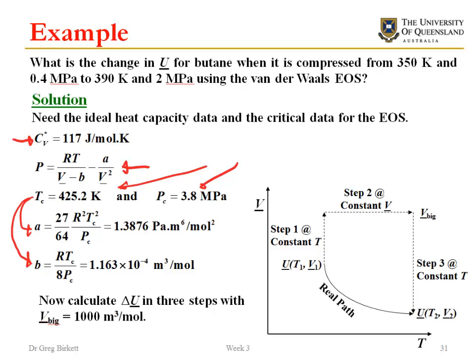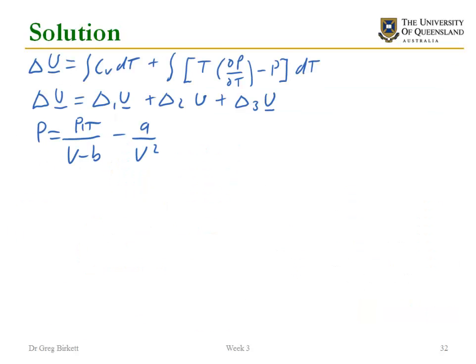Now I'm going to use the same path I was just talking about: up to ideal gas conditions, change in temperature, and then back to real gas conditions again, using this three-step path. If I'm going to do this path I have to define what my V_big is, and I'm actually going to change that and make it equal to infinity. You'll see why that's a good idea in a minute. What I've started with here is just the definition of a change in U. Then I've introduced the path I'm going to use, so my change in U is equal to step one plus step two plus step three.